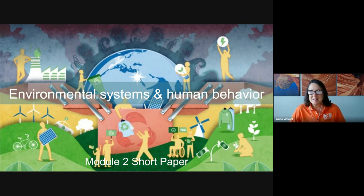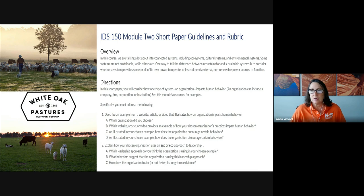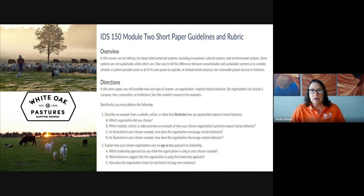So let's get started. For this short paper, you're asked to write about two prompts. The focus is on the impact of an organization — the impacts an organization can have on human behavior. Here we recall that an organization is a type of a system and that as such, it has connections to other systems.